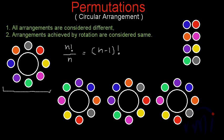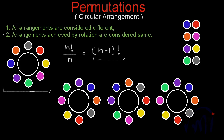This is how we calculate permutations when things are arranged in a circle. You have to check whether arrangements achieved by rotation are considered or not. If they are considered different, the number of arrangements is n factorial. If rotated arrangements are not counted separately, then it is n minus 1 factorial. We will next take a few more solid examples based on permutations and combinations. Keep watching MathSmart — bye-bye till then.